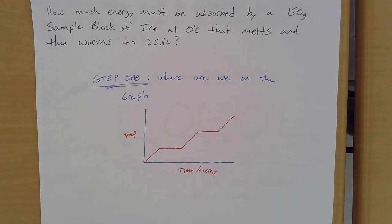So let's look at a problem together. This is a two-step problem, this is what I'm going to be asking you to do. So how much energy must be absorbed by a 150 gram sample block of ice at zero degrees that melts completely, then warms to 25 degrees Celsius. So where are we on this graph? That's the first thing that I want you to do.